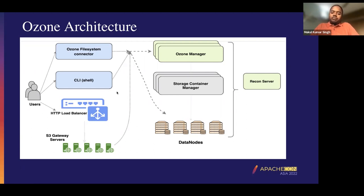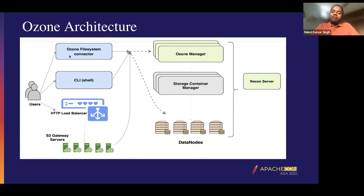On the left part of this diagram, we have the user access methods. The most common user access method is the Ozone file system connector, which is a Hadoop compatible file system using which applications like Hive, Spark, and Yarn would be talking to Ozone. Then we have the CLI shell, which has been designed by Ozone developers as Ozone was getting developed to help them debug issues, but it is completely feature-rich and lets you perform all Ozone operations.